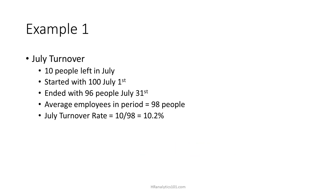As an example, if 10 people left the company during the month of July, we started the month with 100 people, and we ended the month with 96 people, then our turnover rate for the month of July would be 10 divided by 98, or 10.2%.